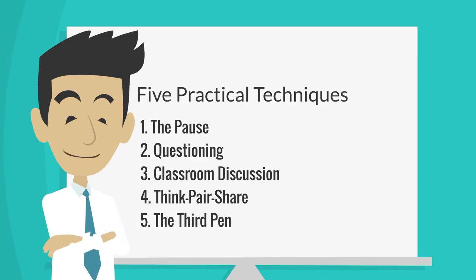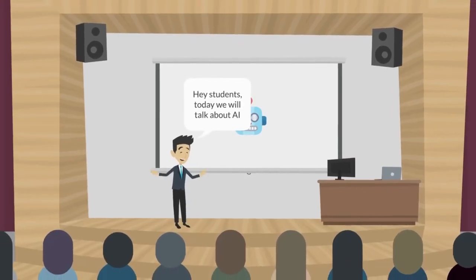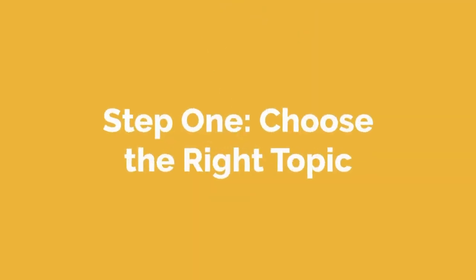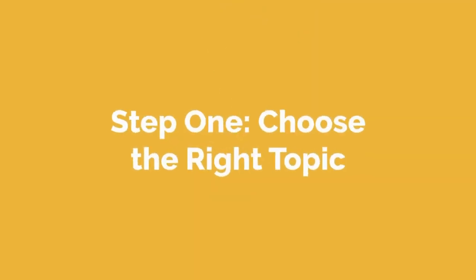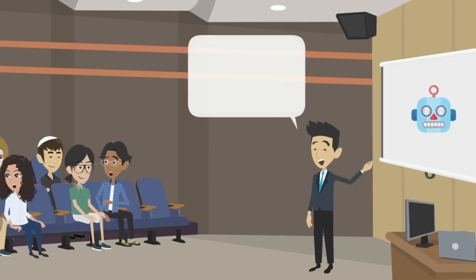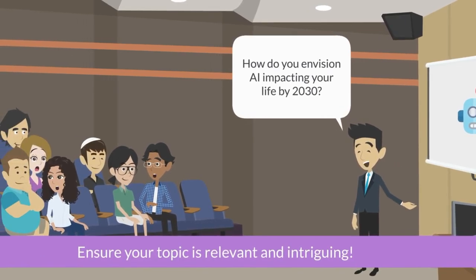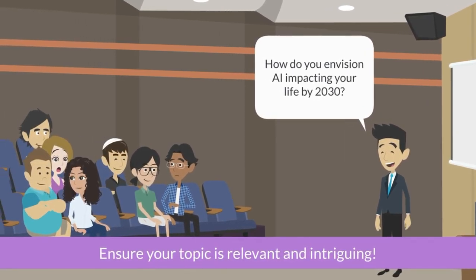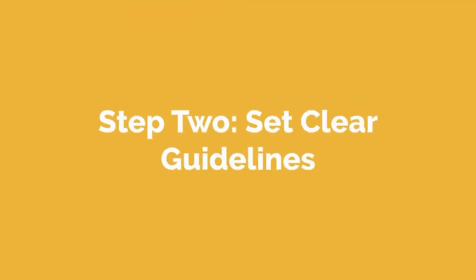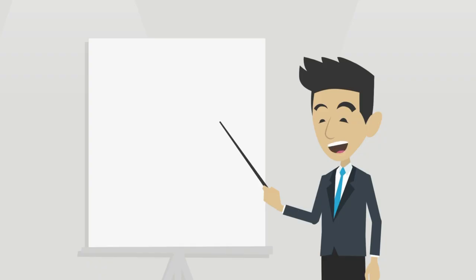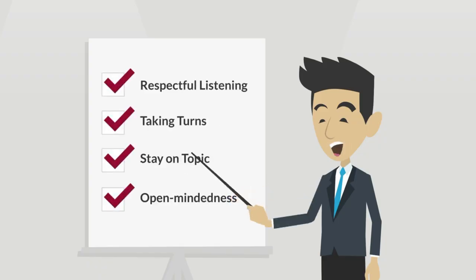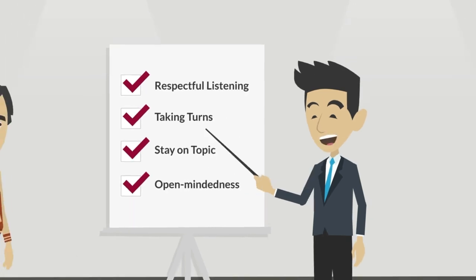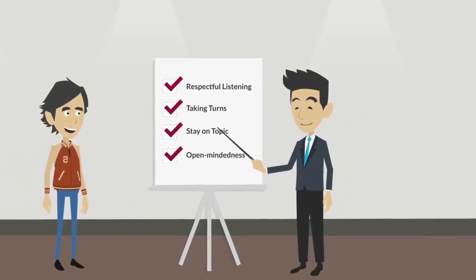Next, we have classroom discussion. This straightforward approach will help you create an engaging and educational environment for all students. Step 1: Choose the right topic. Pick a topic that's relevant and intriguing to your students — broad enough to spark diverse opinions, yet focused enough to guide meaningful discussion. Step 2: Set clear guidelines. Before starting, clearly outline the discussion rules. Emphasize respectful listening, taking turns, and how to disagree constructively. This sets the tone for a productive discussion.